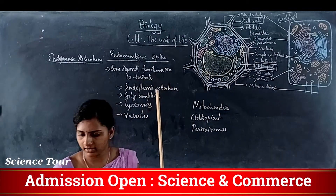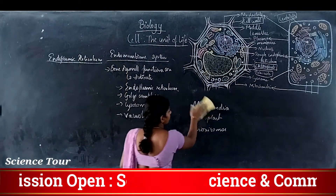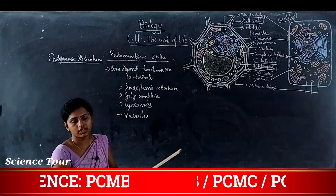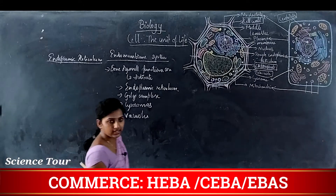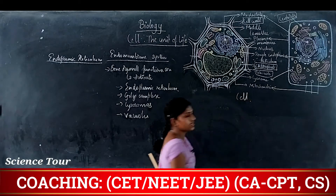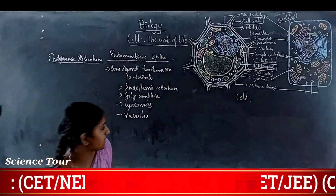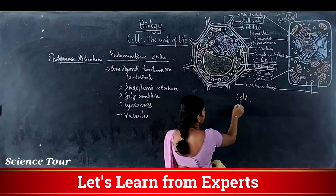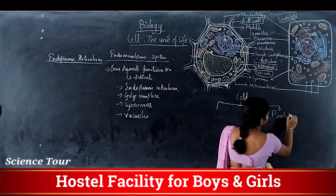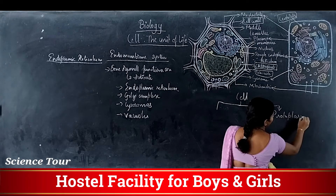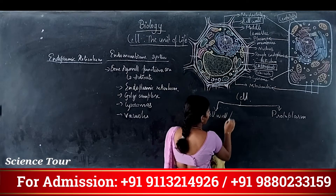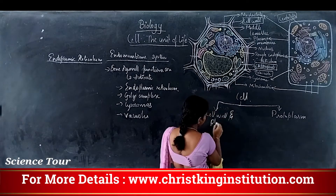Before explaining the endoplasmic reticulum, I will give you an overview of the cell — what we are going to study in the chapter. The cell, as a compact structure, is divided into two main parts: the protoplasm, and the cell wall and plasma membrane.